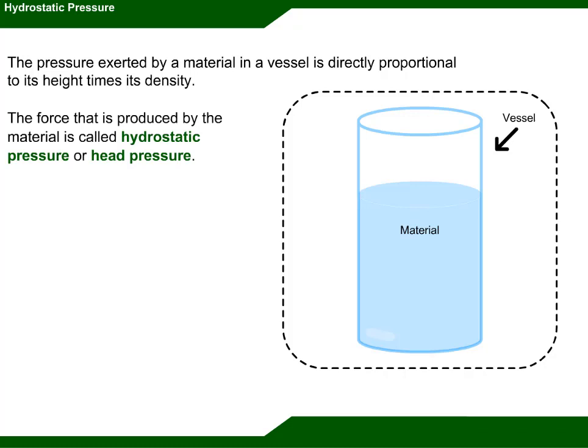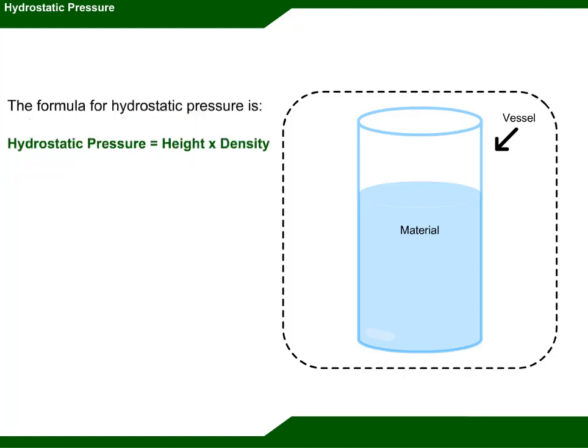The force that is produced by the material is called hydrostatic pressure, or head pressure. The formula for hydrostatic pressure is: hydrostatic pressure equals height multiplied by density.